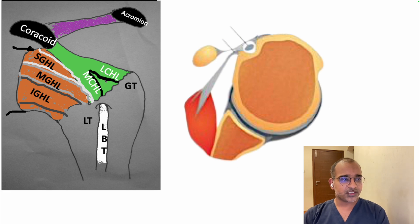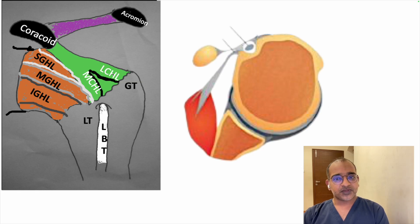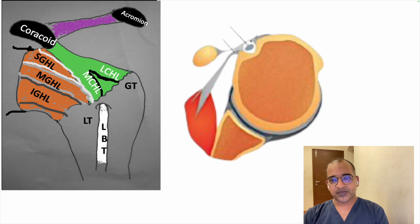Here we can see the rotator interval. In the rotator interval, if you see the ligaments — this is the greater tuberosity, this is the lesser tuberosity. Towards the lesser tuberosity side, we have the medial band of coracohumeral ligament joining the superior glenohumeral ligament. Laterally, this is the lateral band of coracohumeral ligament. In between, the long head of biceps tendon is passing. In the cross-section, this is the long head of biceps tendon, this is the transverse humeral ligament, and this is the lateral band of coracohumeral ligament with the medial band and superior glenohumeral ligament complex.